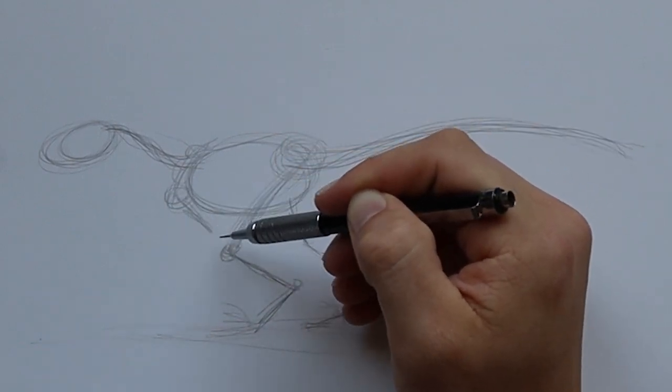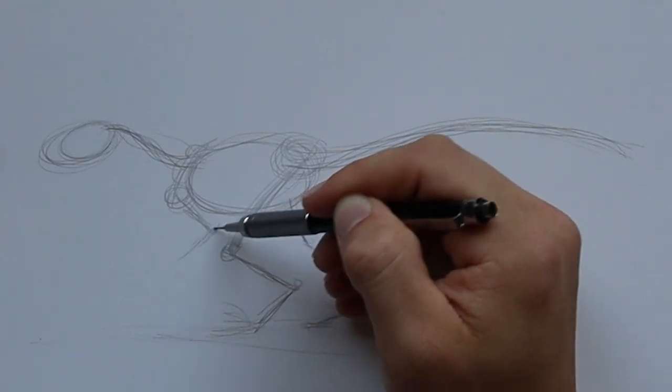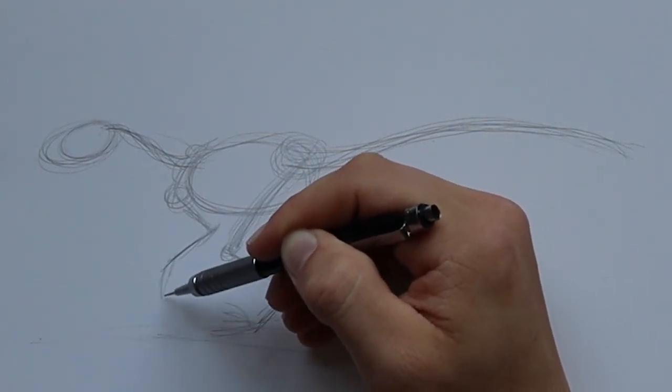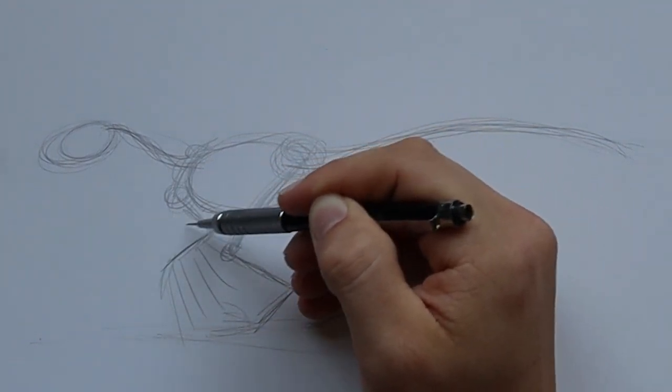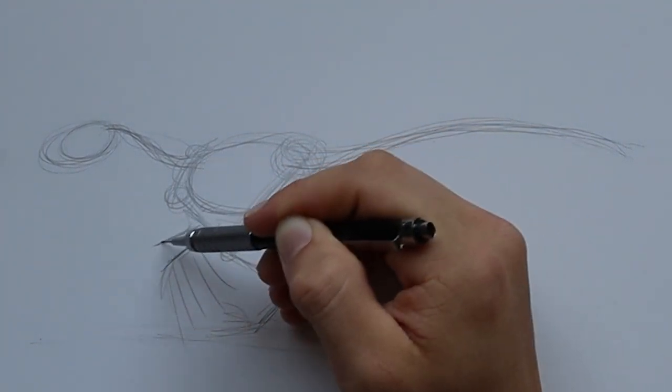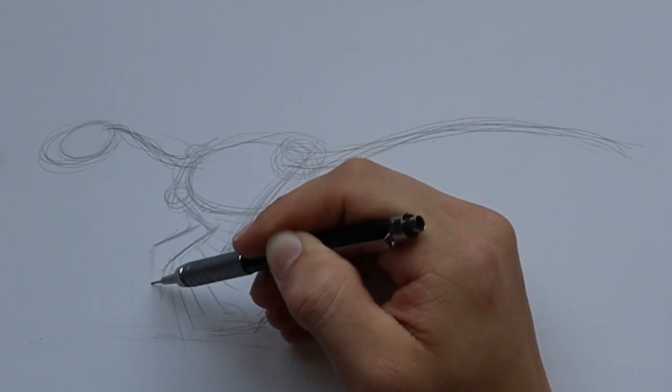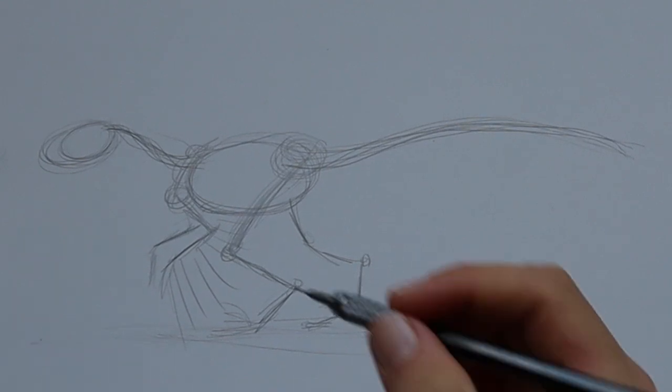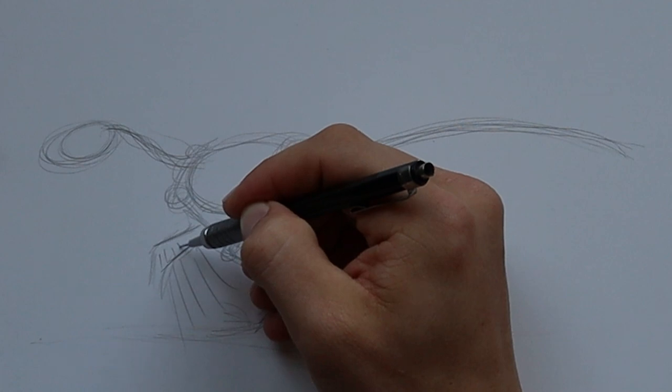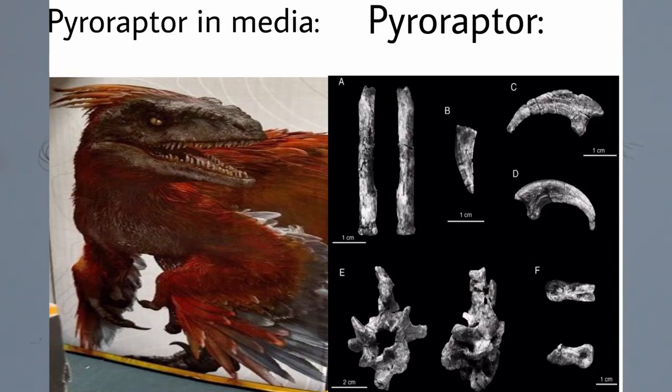Now this Pyroraptor is just covered in feathers so you're not going to be able to see much of the arms at all. This is all going to be feathered like so. There's a really funny meme of Pyroraptor. It's like Pyroraptor in Jurassic World Dominion and then Pyroraptor in real life and just shows like a little bit of some scattered fossils. I'll put the meme up there if I remember to. But yeah, I thought that was really funny.